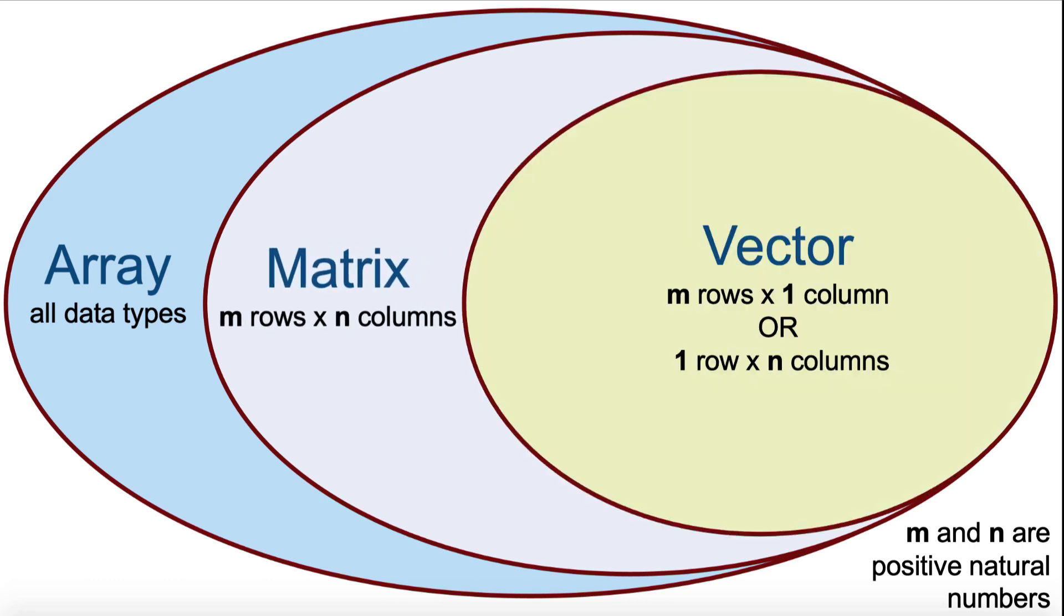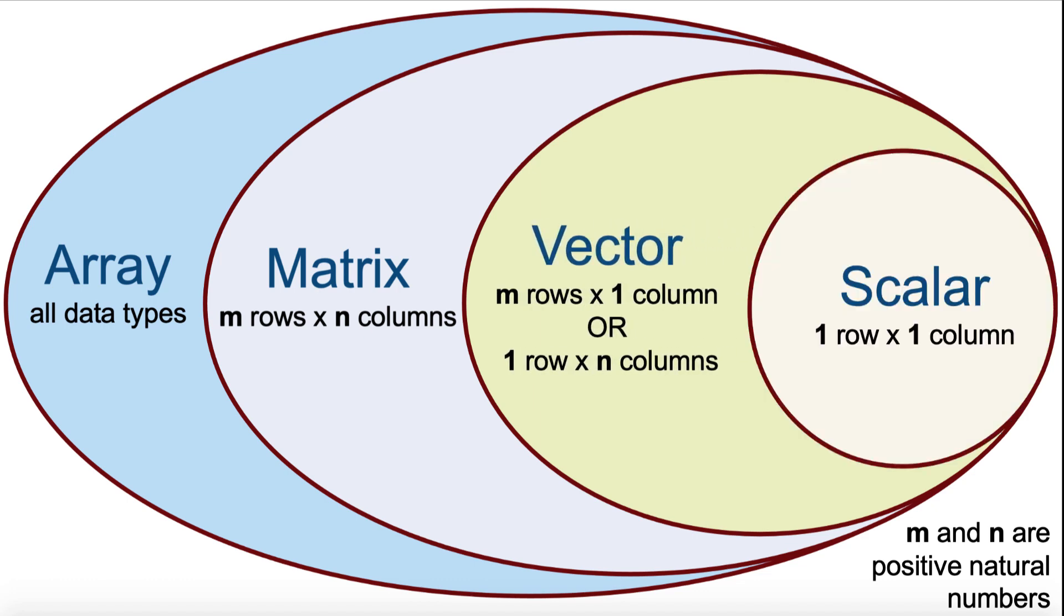Within that, a one-dimensional array of numbers with either one row or one column is called a vector. And within that, a one-by-one array or a singular number is also known as a scalar.